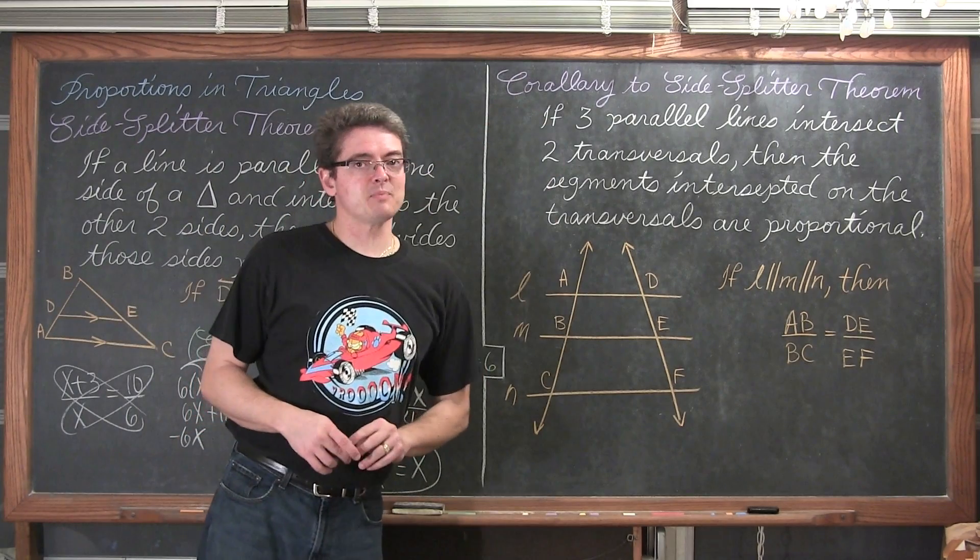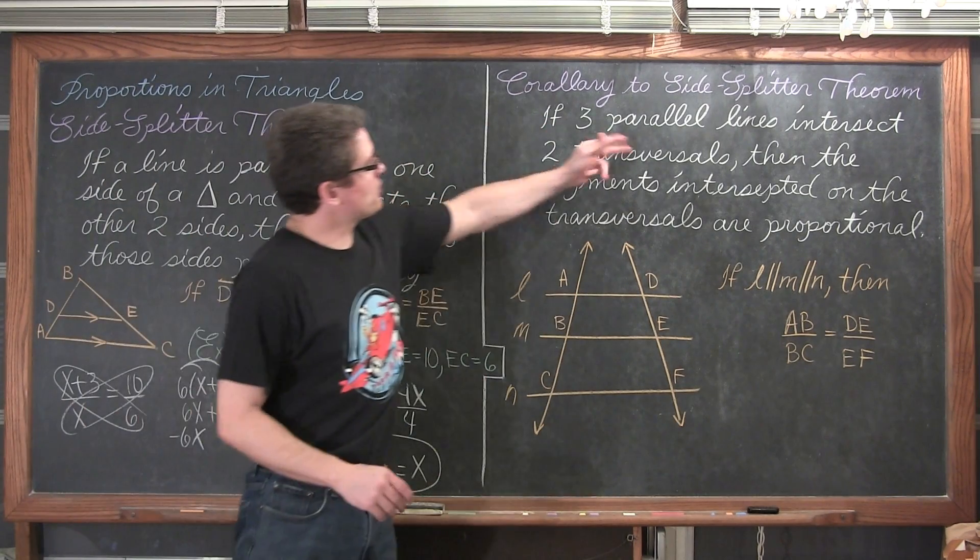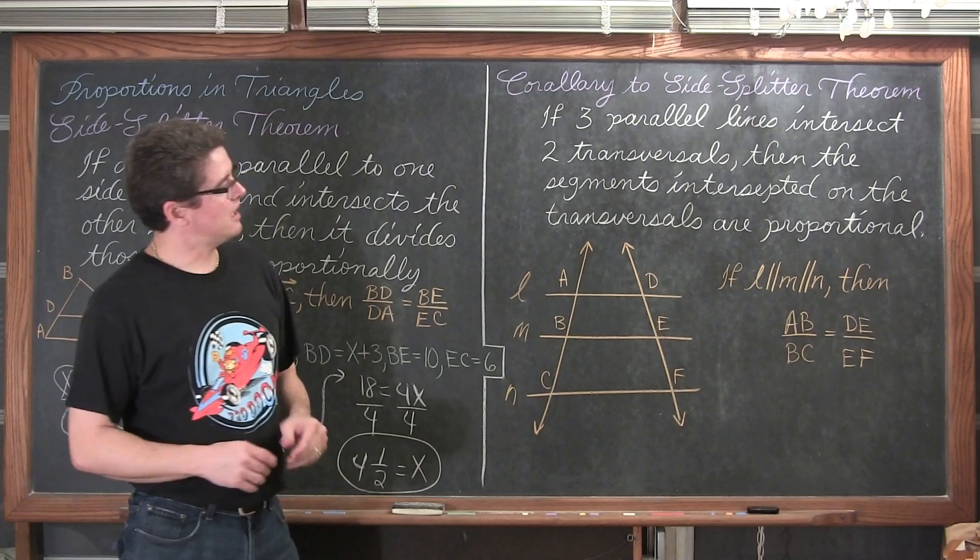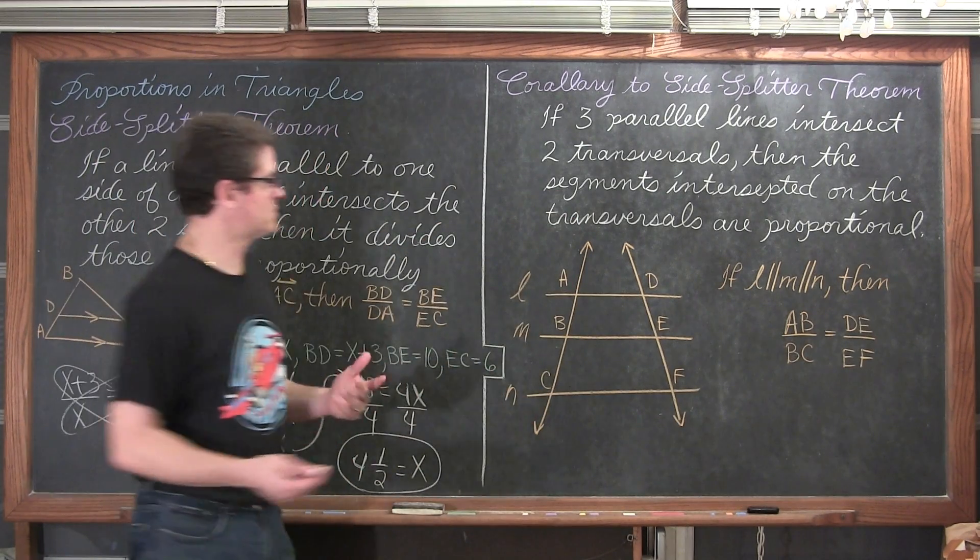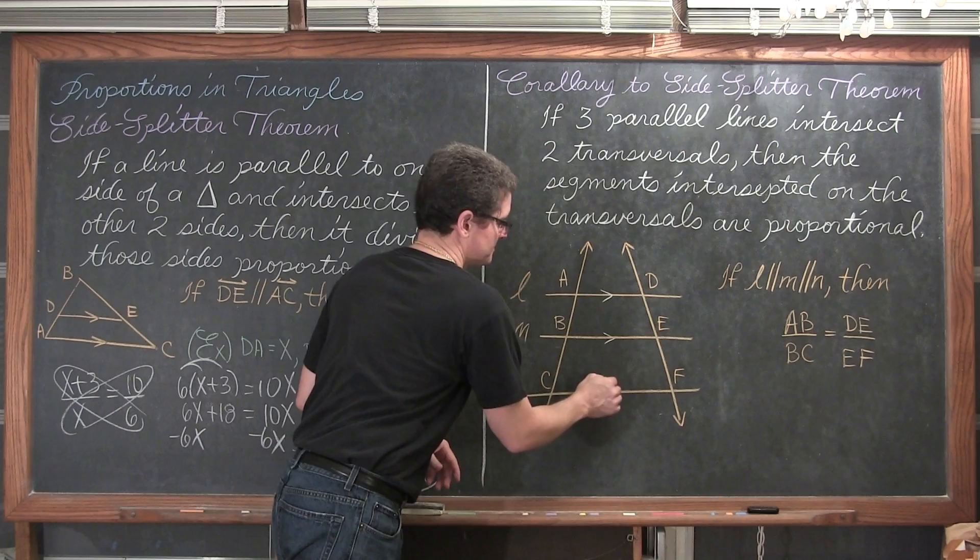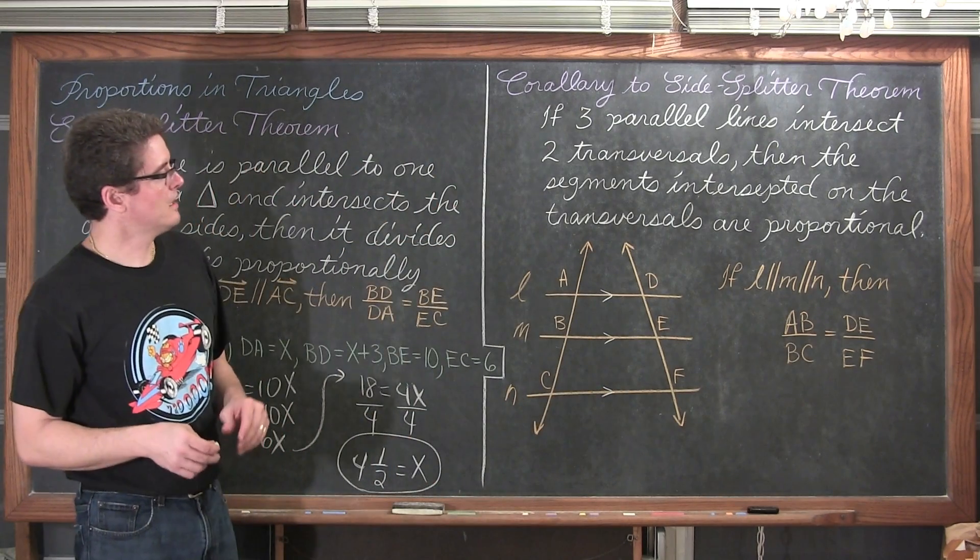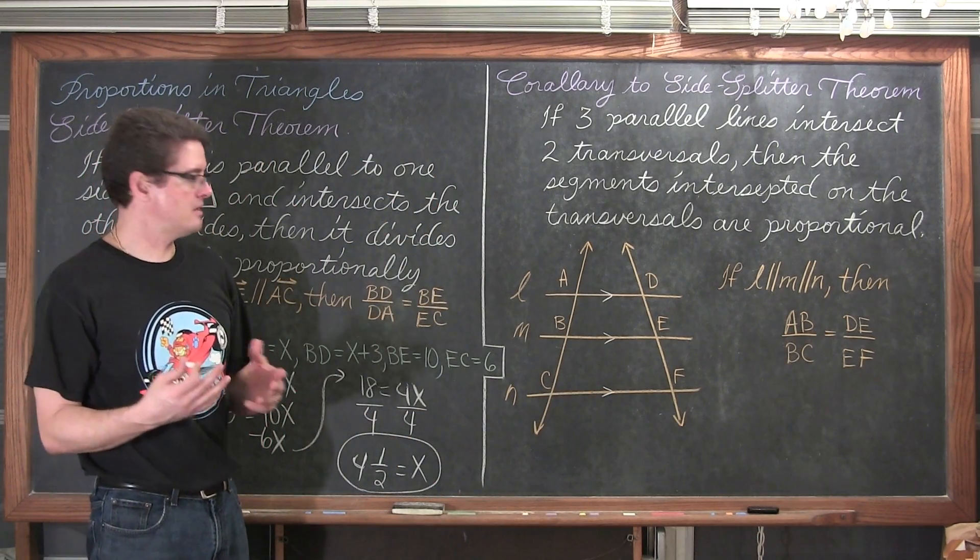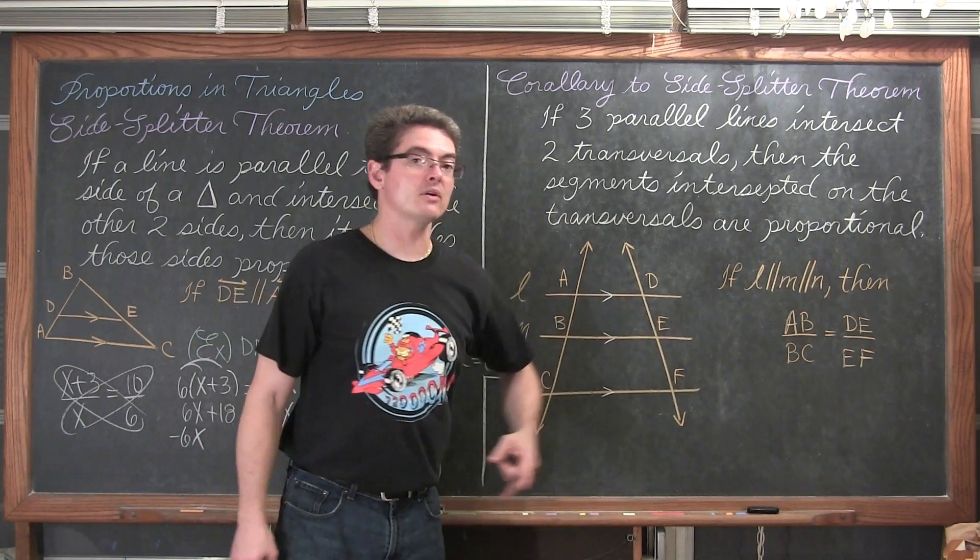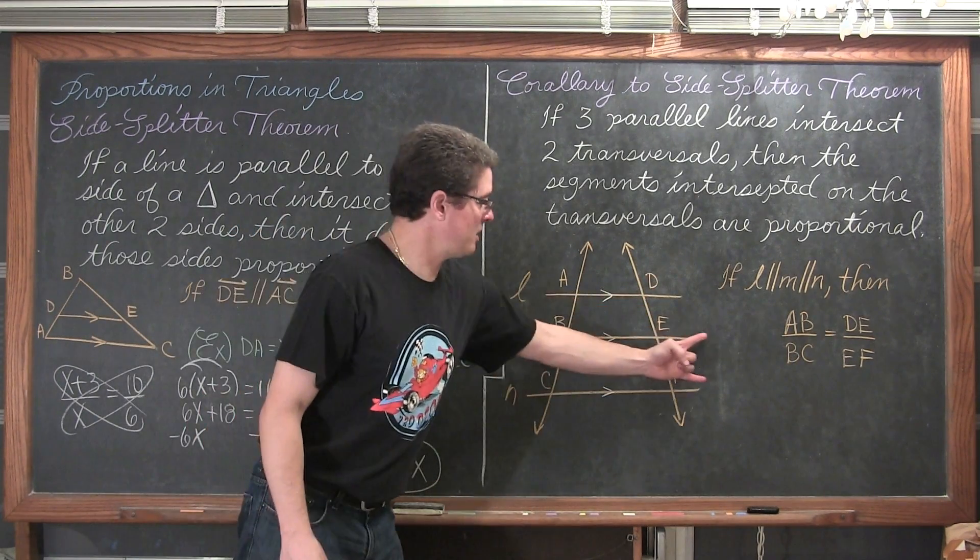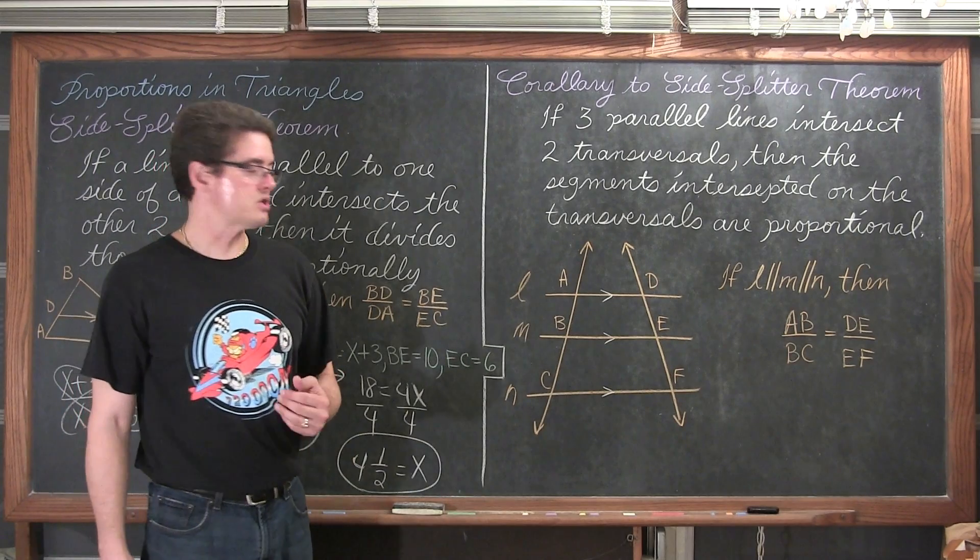Now, corollary to the side splitter theorem. If three parallel lines intersect two transversals, remember a transversal is just a line going through a bunch of parallel lines. Then again, keeping that idea that if these three lines are parallel, then the distance between these two lines are never going to change. And the distance between these two lines are never going to change.